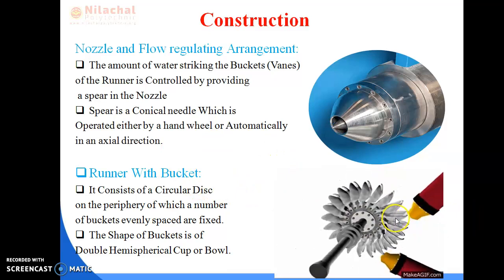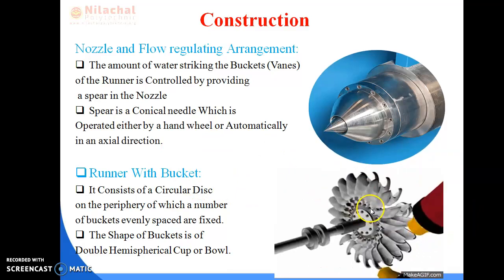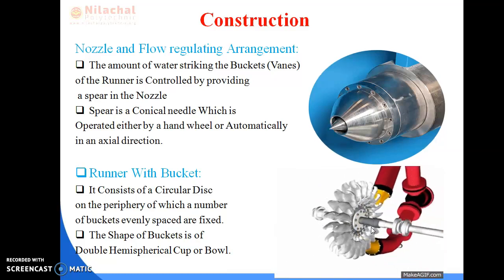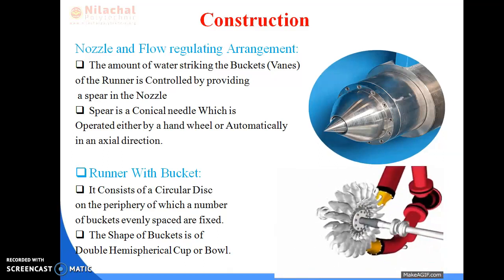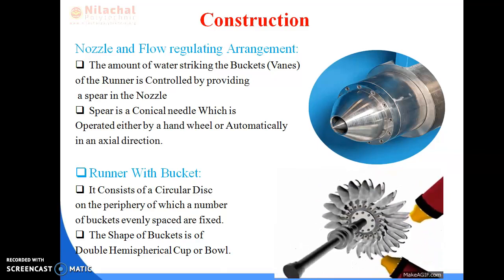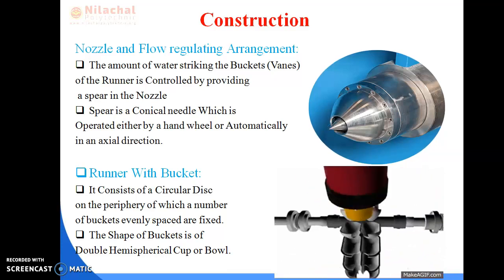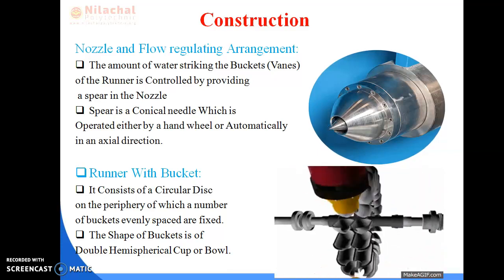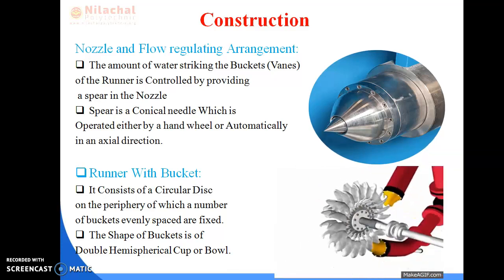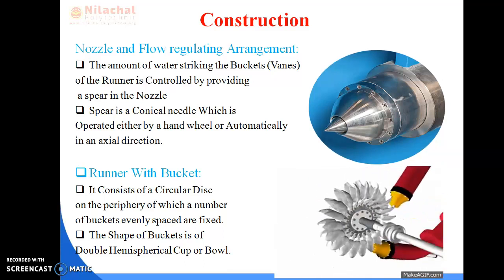The next part is the runner with bucket. As shown in the figure, the buckets are fixed to the runner, and the runner is fixed to the shaft. In the case of an impulse turbine, the blades are known as buckets. The bucket consists of two hemispherical cups attached to each other at a point known as the splitter. The splitter divides the water into two parts when the water strikes the bucket, causing the flow of water through the hemispherical cups and then out of the bucket.